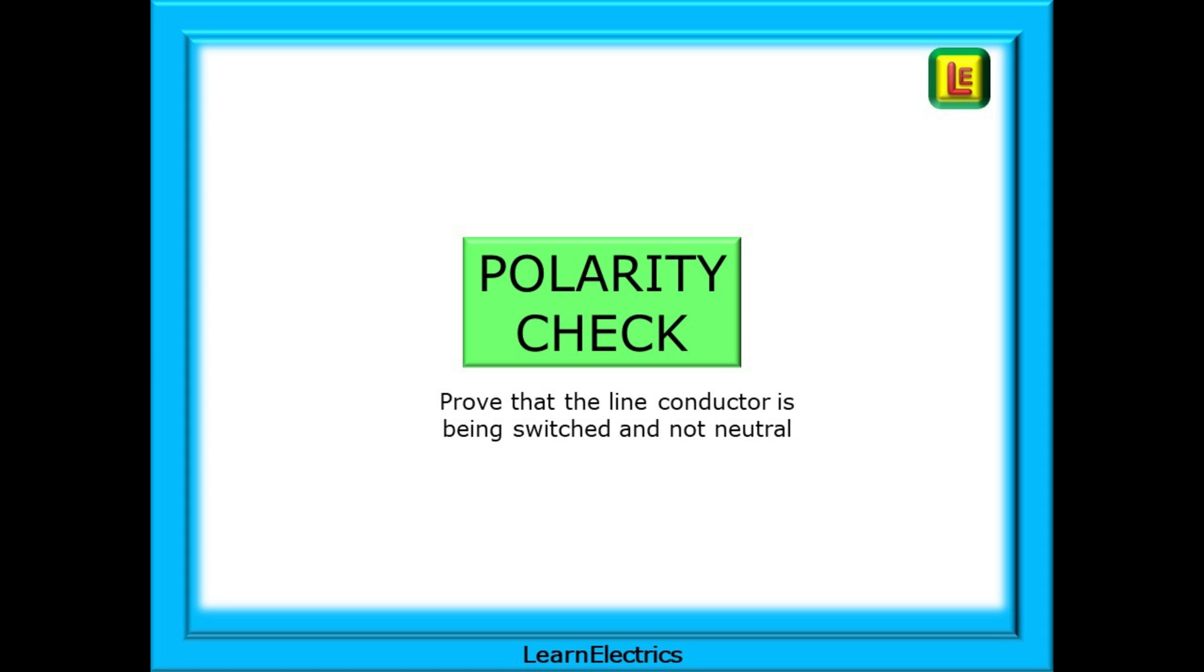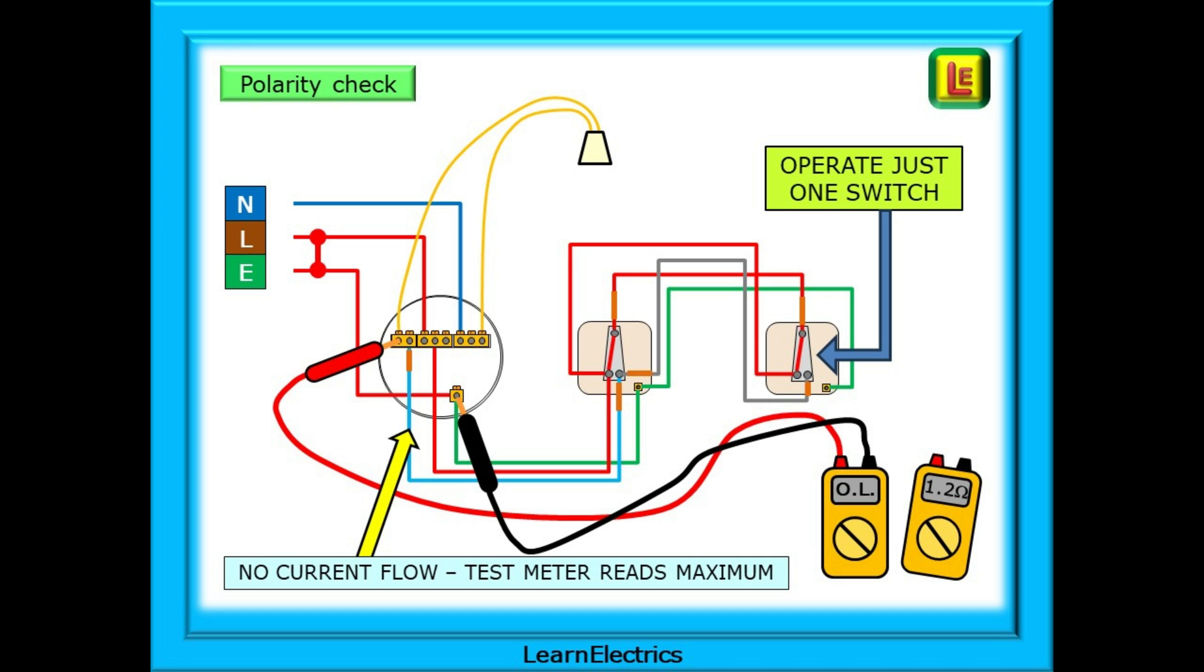A polarity check can be carried out at this stage. According to the wiring regulations test sequence, this is carried out later, but as everything is set up for a polarity check, do it now. Simply operate the first switch and test and the meter should show a maximum reading shown as OL on my meter. Operate the second switch and the meter should display a low ohms reading again. This proves that the line conductor is connected to the switches and is operating correctly. Switching polarity is correct.